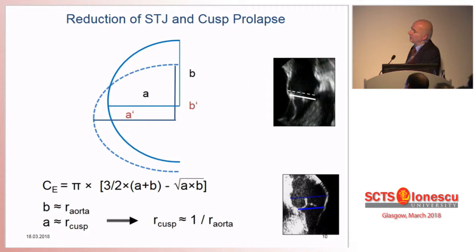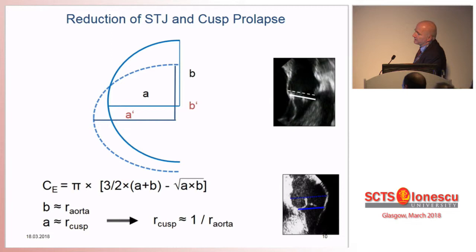The analysis of these patients showed me that I had apparently induced prolapse. Is this unusual or to be expected? Actually, it's not surprising. Let us assume a cusp is a segment of an ellipse with two radii. We reduce the intercommissural distance — radius B to B prime. If we do not change anything on the circumference of the cusp, we will increase radius A to A prime. In other terms, we induce prolapse by reducing root size.